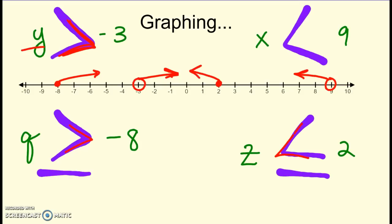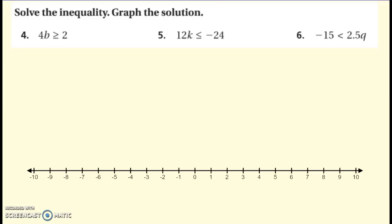Quick review: go over how to say them, how to read them, what the names are, and how to graph them. We're going to go through this kind of quickly, but it's stuff you already know from chapter three. If I have inequalities that involve multiplication — like four times b — I'm going to solve them just like I would if it was an equation. I'm going to get b by itself by doing the inverse operation and dividing both sides by four. Copy and bring everything down.